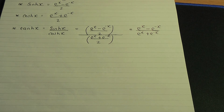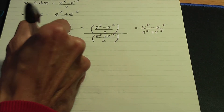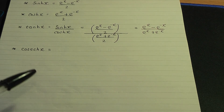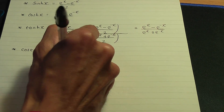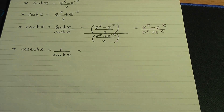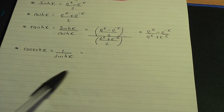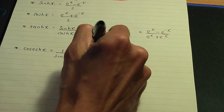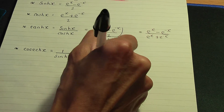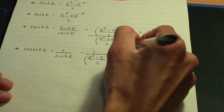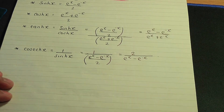There are three more hyperbolic functions. Similar to trigonometric functions, there is hyperbolic cosec. In trigonometry, cosec is 1 over sine, and hyperbolic cosec is similarly 1 over hyperbolic sine. Substituting the definition of hyperbolic sine gives 1 over (e^x − e^(−x)) / 2, which simplifies to 2 / (e^x − e^(−x)). That is the definition of hyperbolic cosec.